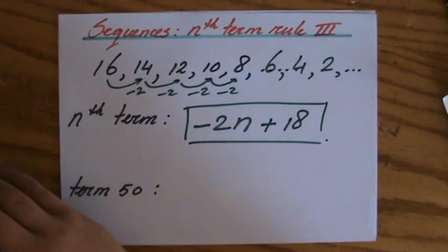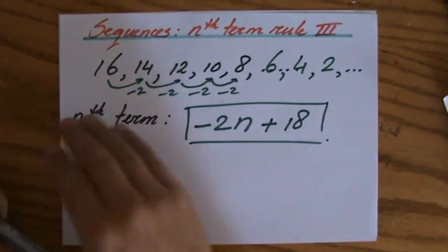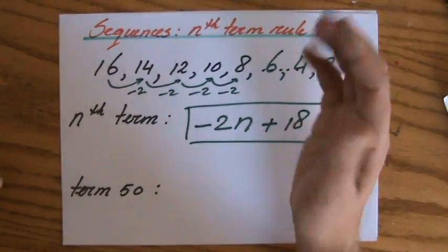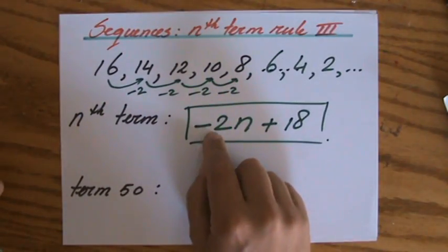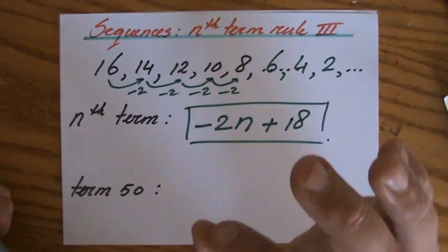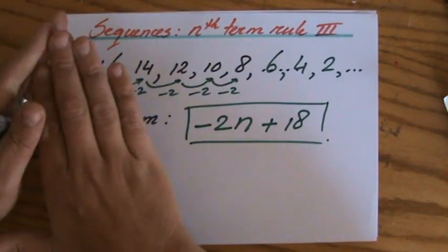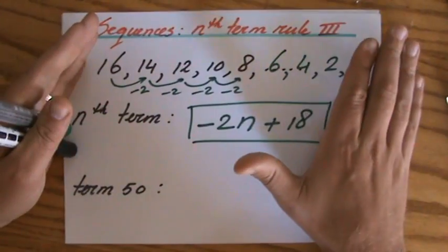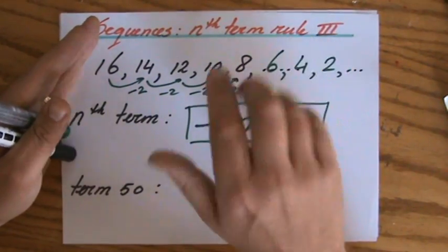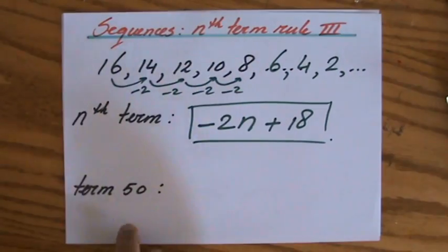Always check that rule. For term 5: minus 2 times 5 is minus 10, plus 18 gives 8. So my fifth term is 8. Fantastic — it checks out!